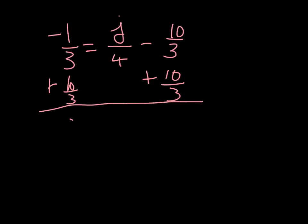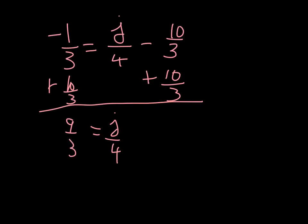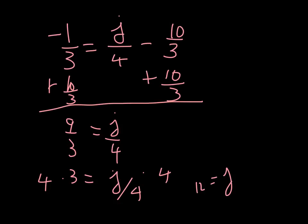This is going to be 9 over 3 equals j over 4. 9 over 3 right here is equal to 3, plus j over 4. Now multiply both sides by 4 and you get j equals 12.